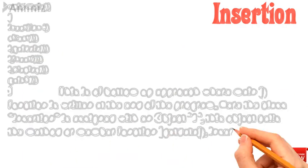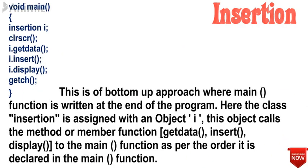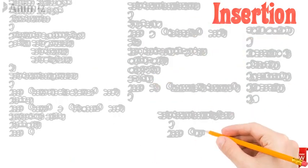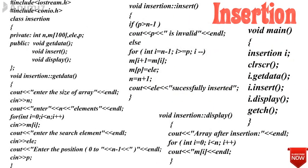The void main or main function is used to call all the member functions of class insertion using object i. For example, check the next program.